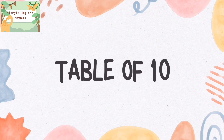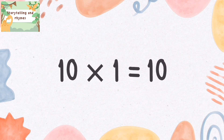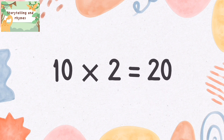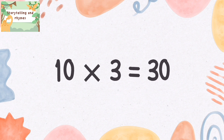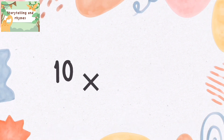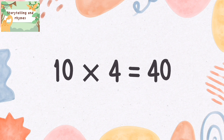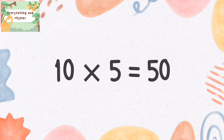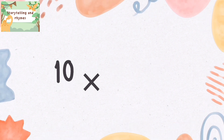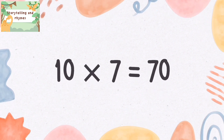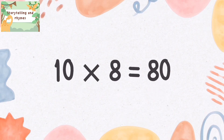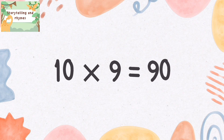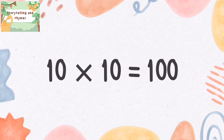Table of 10: ten ones are 10, ten twos are 20, ten threes are 30, ten fours are 40, ten fives are 50, ten sixes are 60, ten sevens are 70, ten eights are 80, ten nines are 90, ten tens are 100.